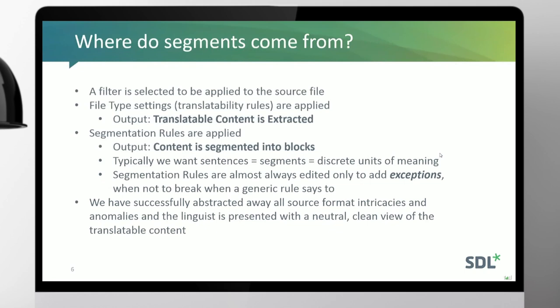Segmentation rules — just as a note — you typically only modify those to deal with exceptions. There are generic rules applied that in the majority use case will extract a full sentence as one segment. Things like abbreviations follow the same character pattern: full stop/period, followed by a space, followed by potentially a capital letter. That sequence normally delineates a segment boundary, but in some cases it might just be an abbreviation followed by a full stop, so you add exceptions.